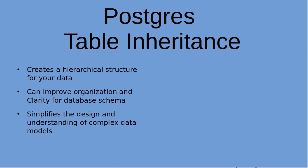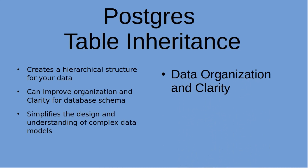The first item to address is data organization and clarity. Table inheritance allows you to create a hierarchical structure for your data, which can improve the organization and clarity of your database schema. Inheritance represents an 'is a' relationship, where child tables inherit columns and constraints from their parent table. This can simplify the design and understanding of complex data models.